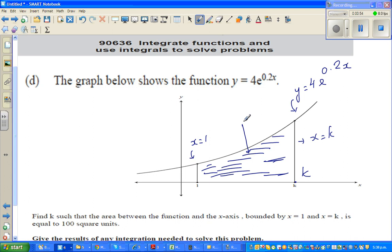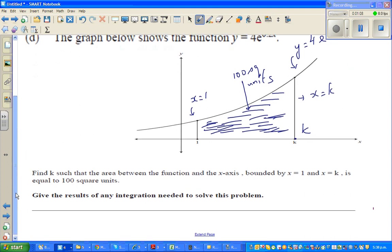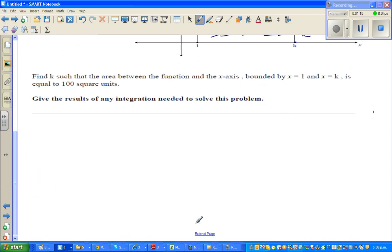This area is 100 square units. You want to find the value of k. This area is given to be 100 square units. So here we have to use, of course, area under the curve is found by definite integration.